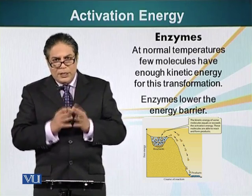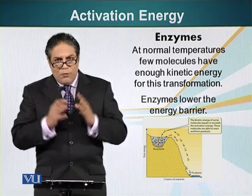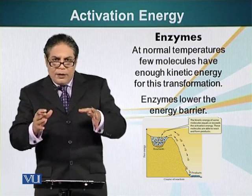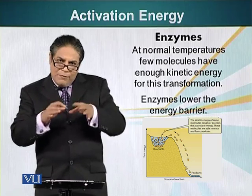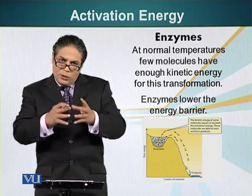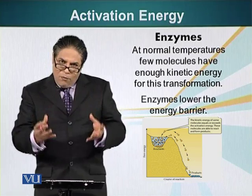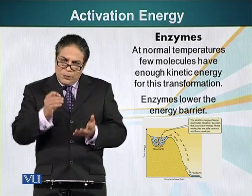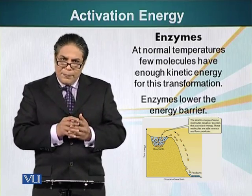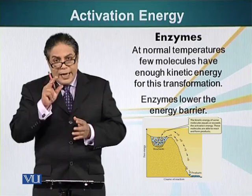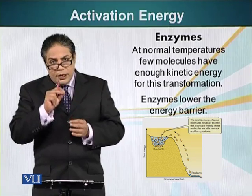So at a specific temperature — say 25 degrees Celsius — we are saying that the average kinetic energy of the molecules, for example methane, is a specific number. However, this is an average.